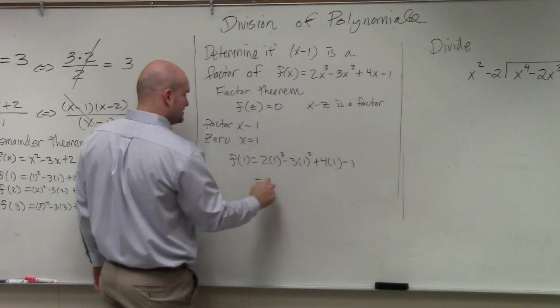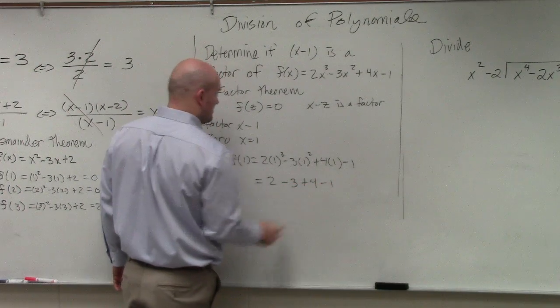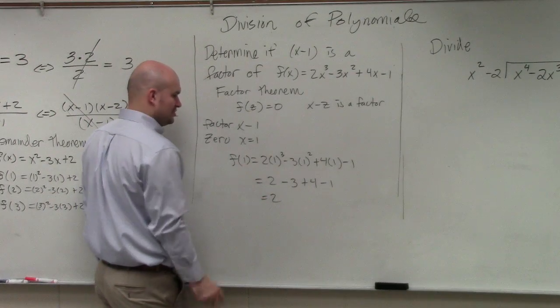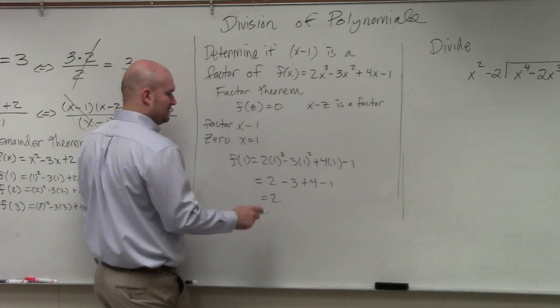So I get 2 minus 3 plus 4 minus 1. And my answer is 2, right? 3. Negative 3, 1. Yep.